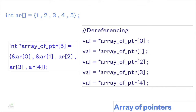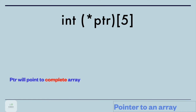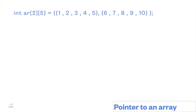Next we'll look into pointer to an array: `int (*ptr)[5]` — here, star and ptr are kept in parentheses. This is a pointer which will point to an array of five elements. The pointer will point to the complete array, not to a single element. It will point to the complete array, which makes it different from a normal variable pointer. Here I am taking intentionally a two-dimensional array which contains values from 1 to 10.